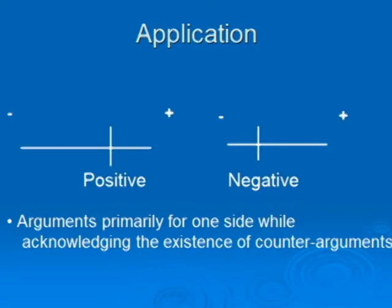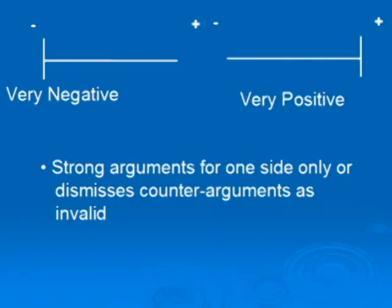Then, of course, you have positive and negative — this is when you feel the author presents arguments supporting primarily one side, but they also acknowledge the existence and validity of counterarguments. Then you have very negative and very positive, and this happens when you feel the author strongly supports one side and really dismisses all the other counterarguments and all the other ways of looking at the issue.